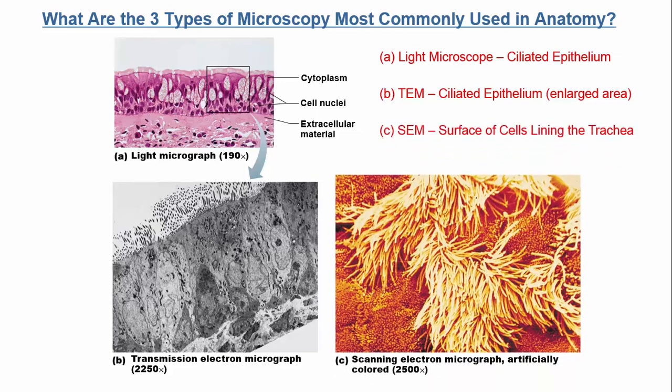A third type is scanning electron microscopy, or SEM. This also gives fairly high-resolution images — not as high as TEM, but pretty high. A benefit of SEM is that you actually see things more in three dimensions, as you can see in this image on the bottom right. The color on this image is also artificial. Just like TEM, with SEM the sample has to be dead — you cannot image live samples with any type of electron microscopy.